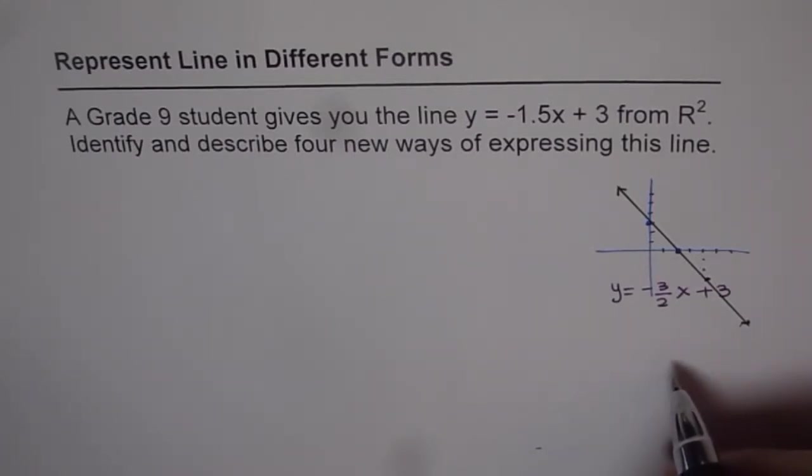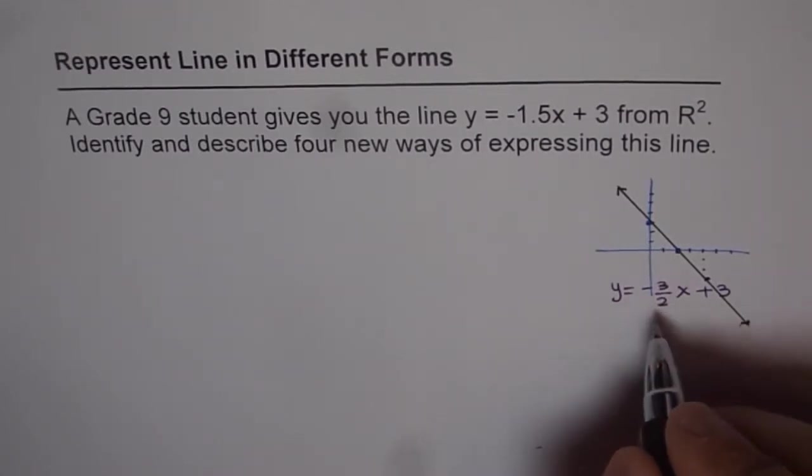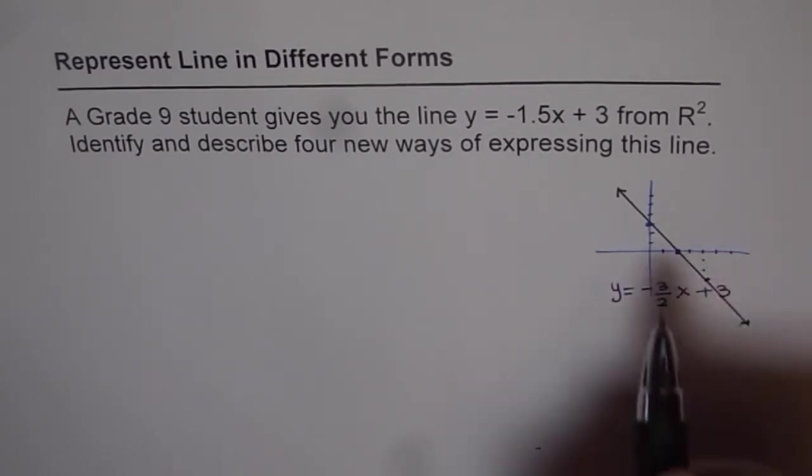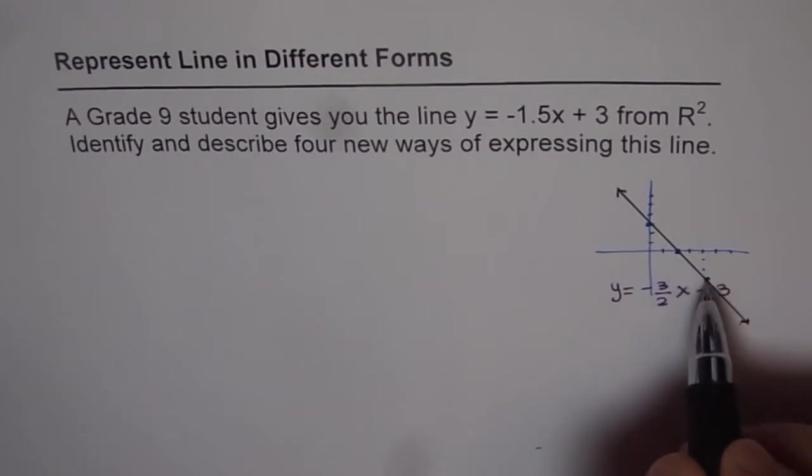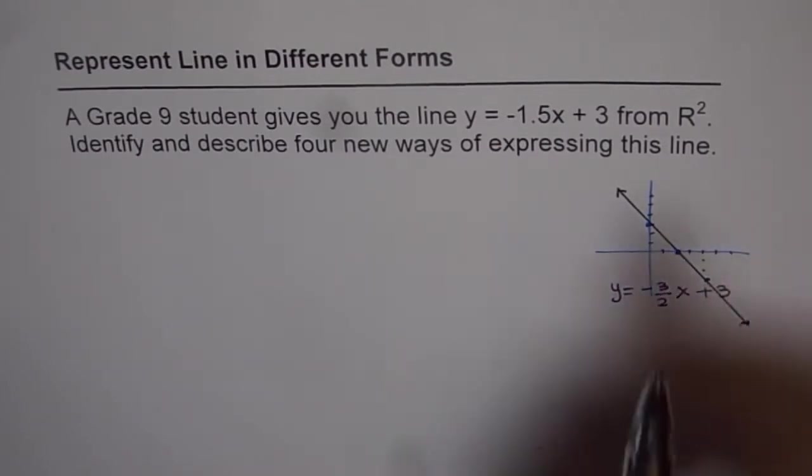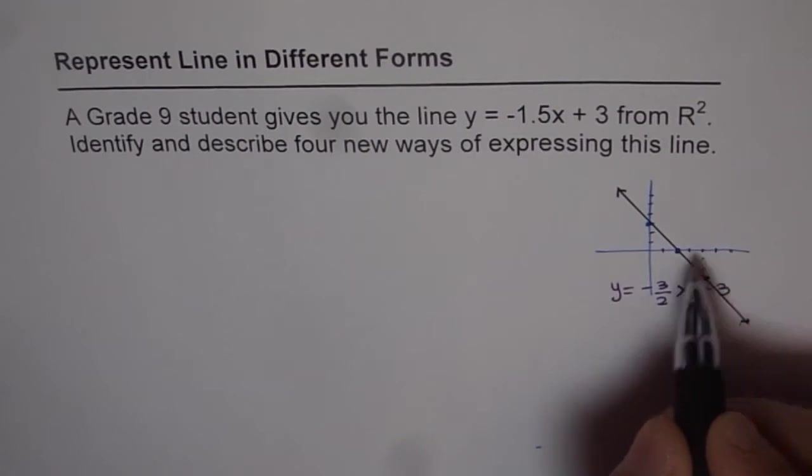Now, we are learning vectors. Here we represent the slope, which is -3/2, as a direction number. We say the direction number is how many units do you go to right and left to get to the next point, as we did here. You saw 2 units to the right and 3 units down.